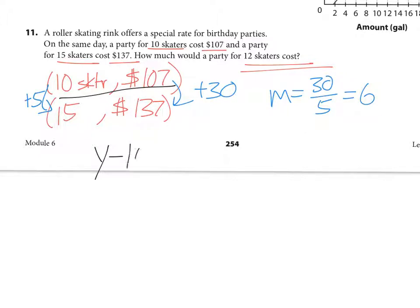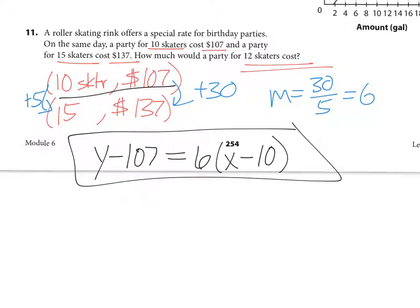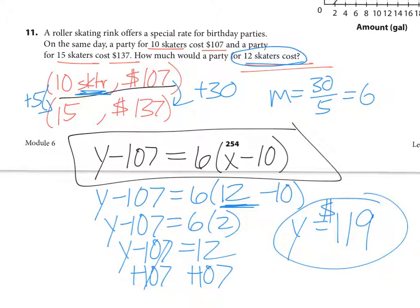Now I can plug in a point which point does it matter no I'm going to plug in the first one so y minus y1 which is 107 equals m times x minus x1 which was 10 now that's the equation. The problem asked me how much would it cost for 12 skaters so 12 here represents my x or y that is my x skaters are my x so what do I need to do with my equation now plug 12 in for x. So now my equation becomes y minus 107 equals 6 times 12 minus 10 now I have to work this out.